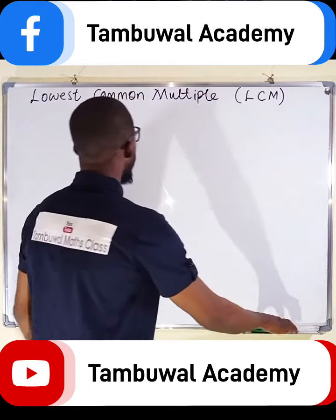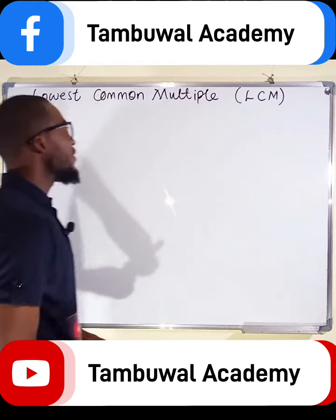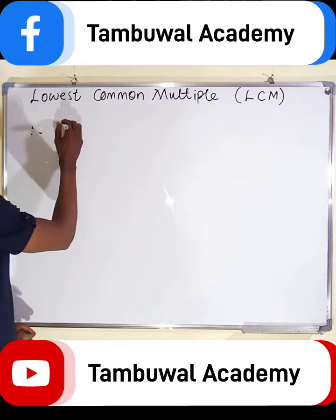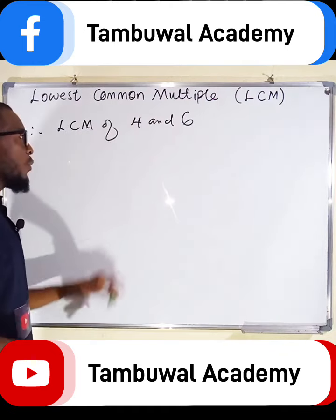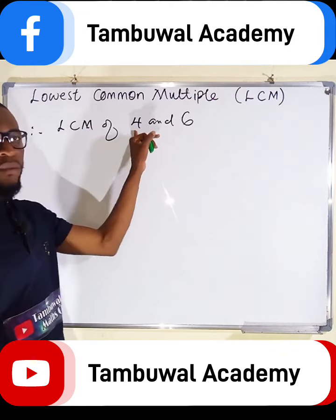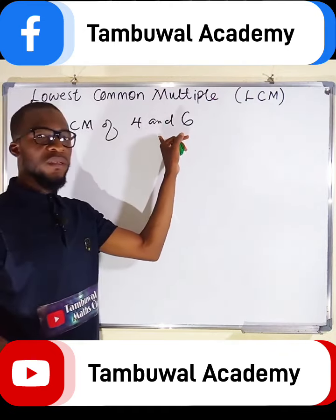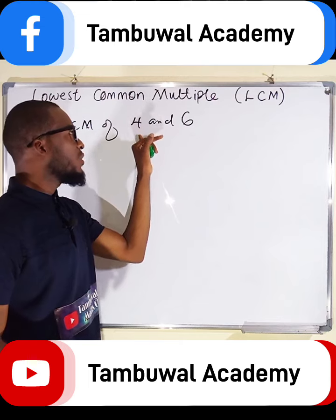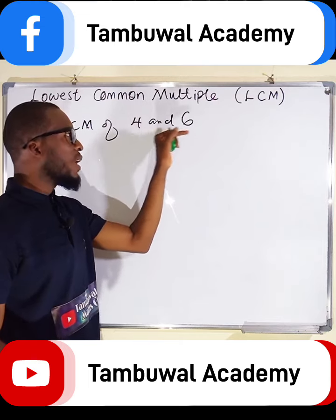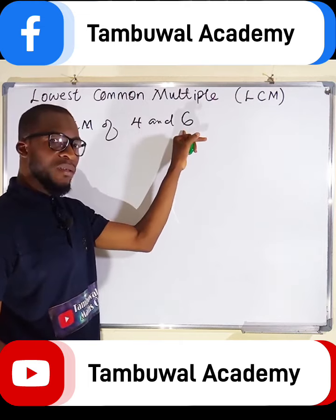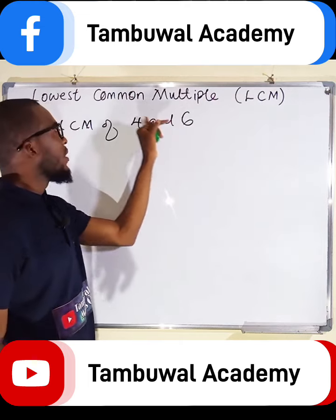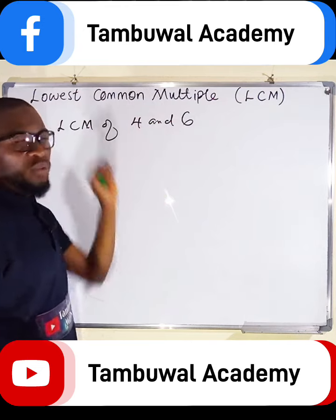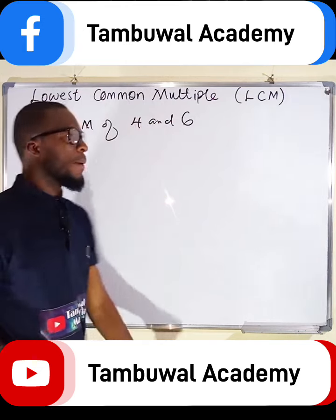First, we want to find the LCM of four and six. We are going to list out the multiples of four and six, then take the common ones, then choose the least one.